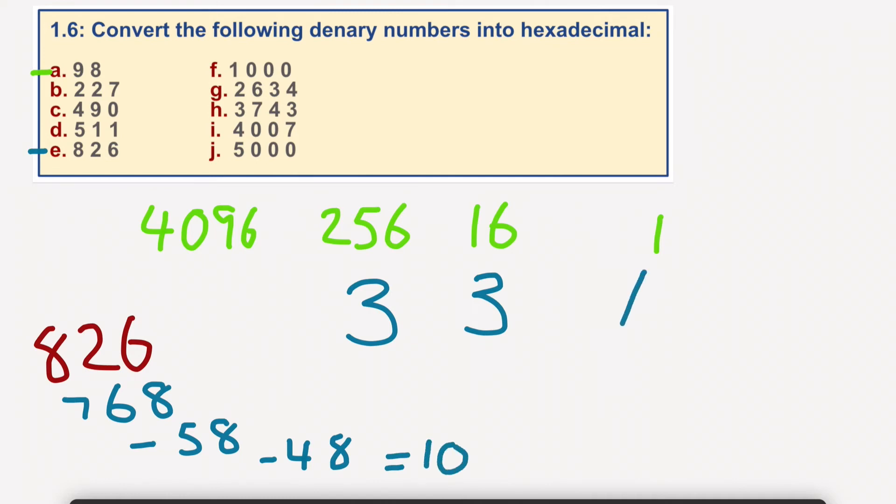So it would be 33A. 3 times 256, plus 3 times 16, plus 10 times 1. Okay, so we'll do one more.